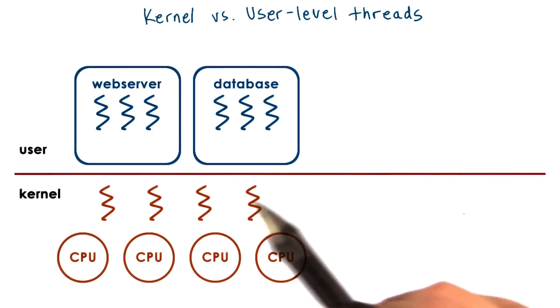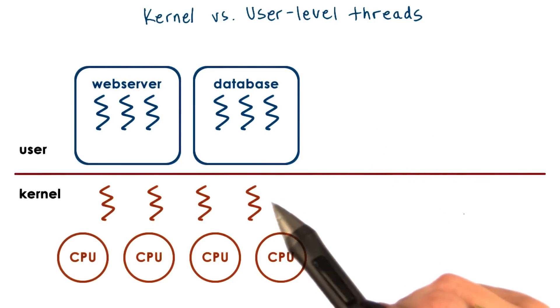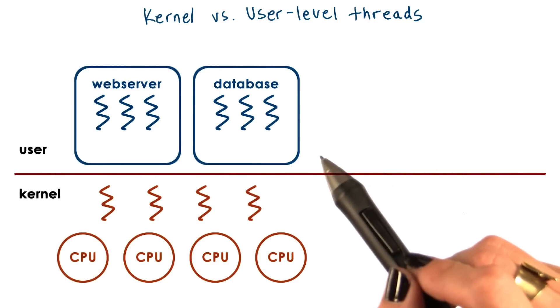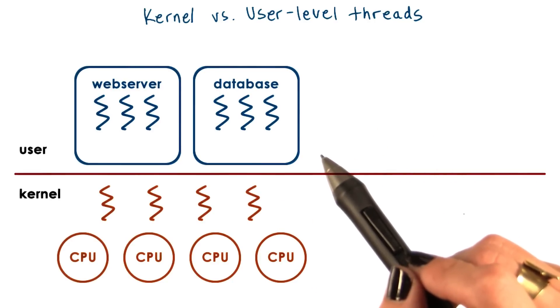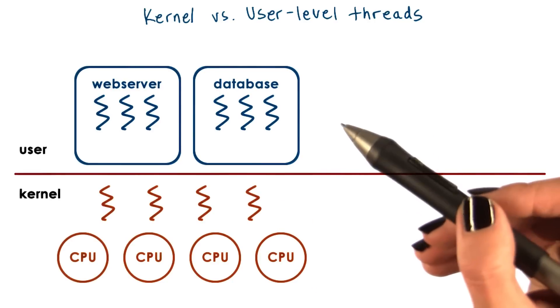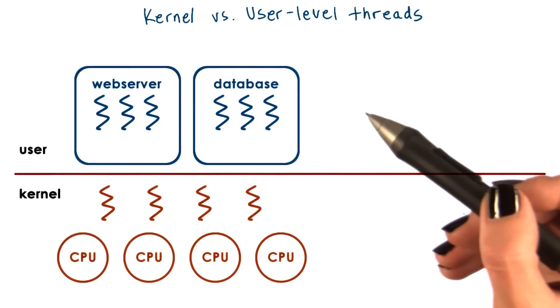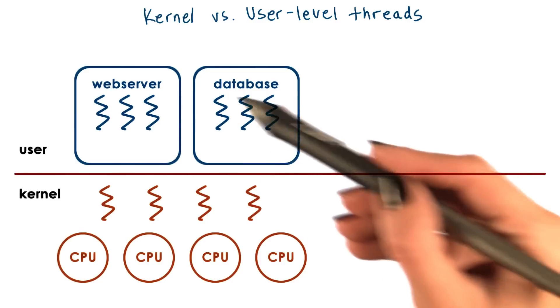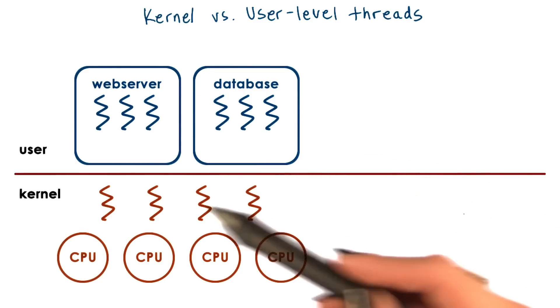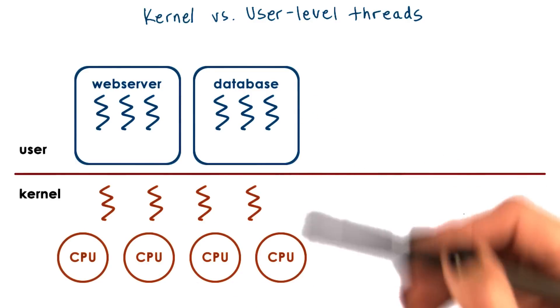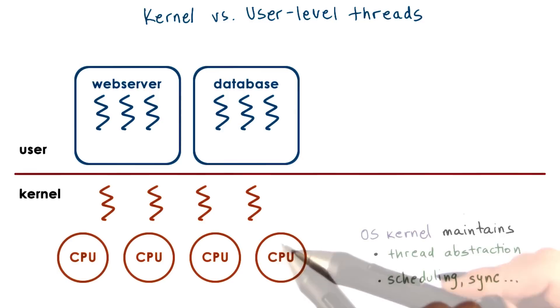Let's start by revisiting the illustration we used in the Threads and Concurrency lecture. There we explained that threads can be supported at user level, at kernel level, or both.